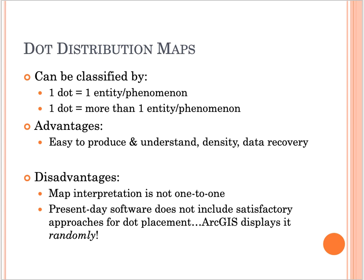For example, one dot could equal 10,000 people — so for a population of one million, how many dots would we have? The advantages are that this type of map is easy to produce and understand, good for seeing density, and has good data recovery. The disadvantages are that map interpretation is not one-to-one, and present-day software does not include satisfactory approaches for dot placement — ArcGIS displays it randomly.